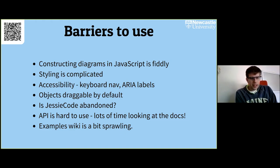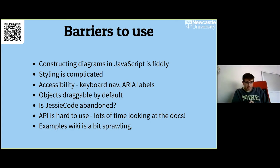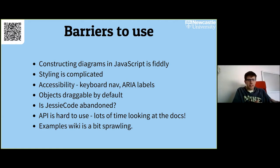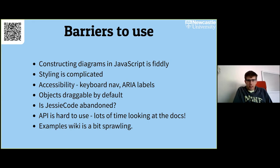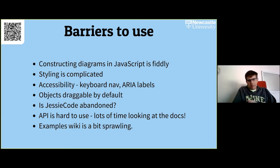I use JessieCode a lot personally but I don't really understand it. I've found working out how to use the API quite difficult. I know there was a project started last year about making a nicer book about JSXGraph, and I don't know how much progress there's been. I also don't really find the examples wiki useful — finding something that's up to date and does what I want is tricky. That's my long list of complaints.